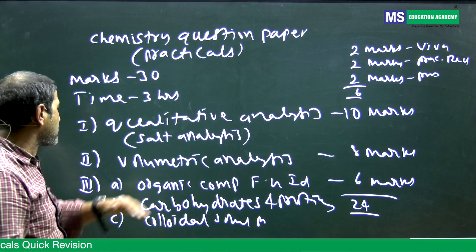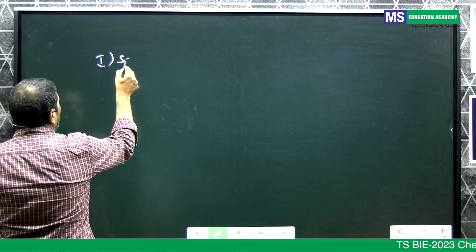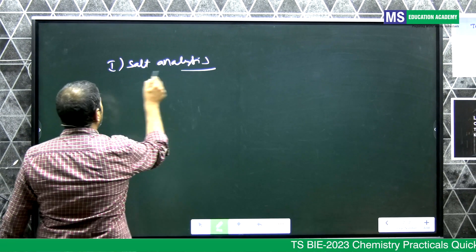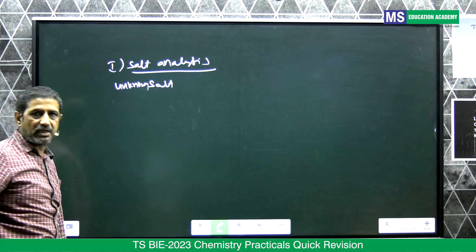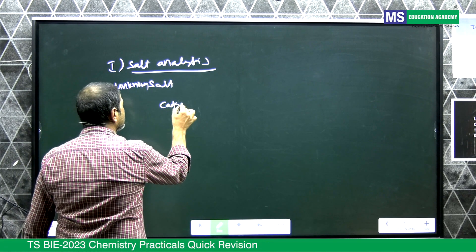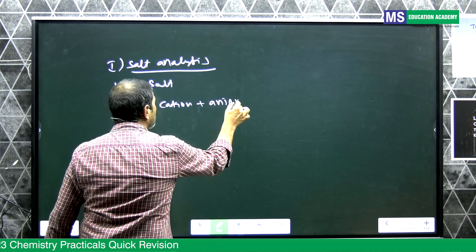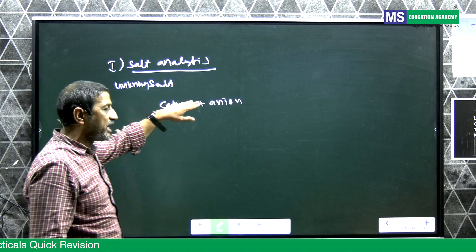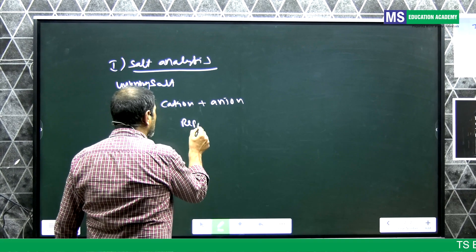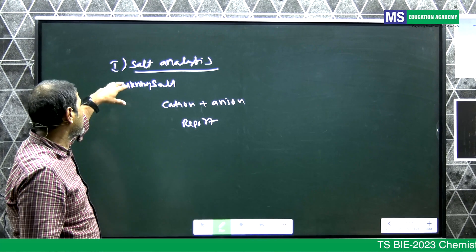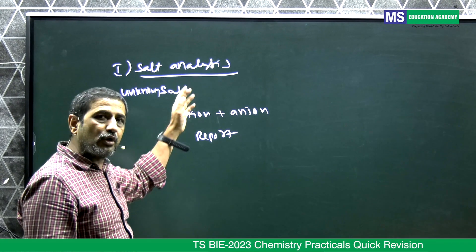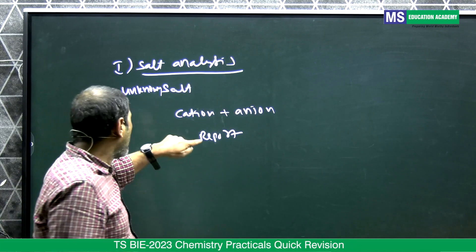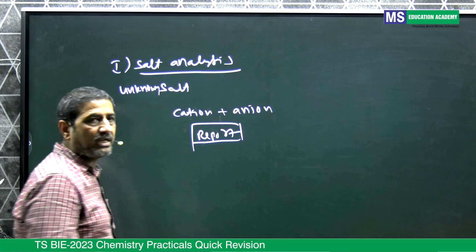Now, what is qualitative analysis or salt analysis? In question number one, they will provide you an unknown salt. That simple salt contains one cation and one anion. You need to identify the cation and the anion, and finally report the salt.